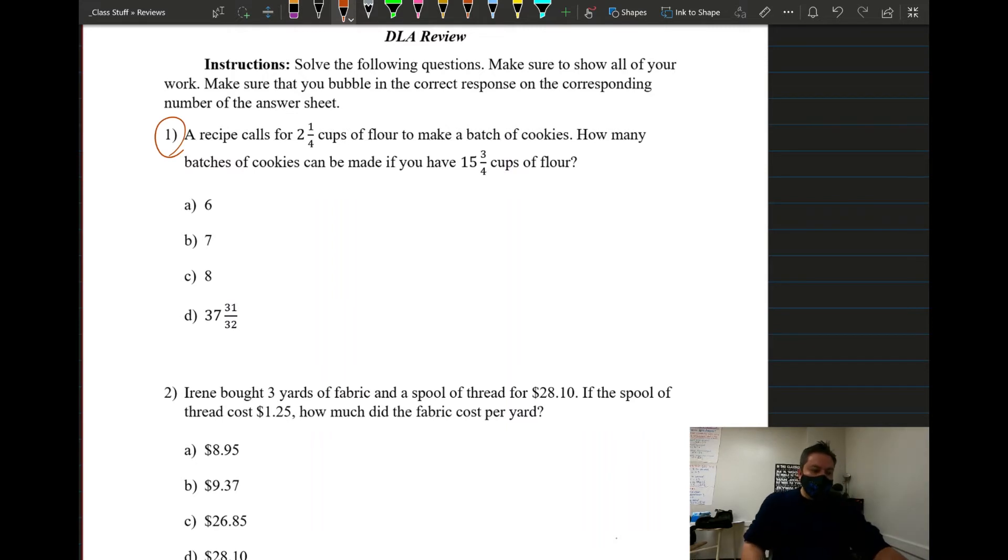Without further ado, I'm not gonna do all of them, I'm just gonna do a few of them, hopefully the most that we can do. For instance, right here is number one. It says a recipe calls for 2 and 1/4 cups of flour to make a batch of cookies. How many batches can be made if you have 15 and 3/4 cups of flour? So we have more than we need to make one batch, so basically all we have to do in this one is divide.